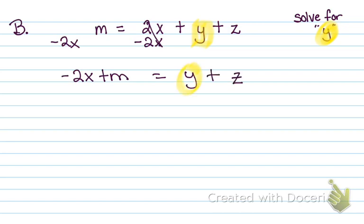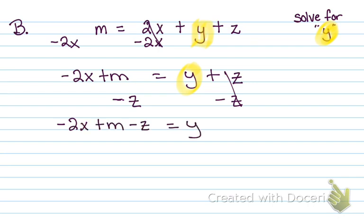Again, I'm still solving for Y. So now I've got to move over my Z — minus Z on both sides. I cannot combine it with anything over here because there's no other like term with Z. So it's going to be a whole thing. It doesn't matter which way we write this — negative 2X plus M minus Z equals Y, or M minus 2X minus Z. Those are all equivalent. Just make sure whatever you put first, the negative is in front of the 2X, positive M, and a negative Z. This would be our final answer.